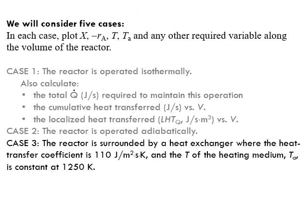Now let's go to Case 3. The reactor is surrounded by a heat exchanger where the heat transfer coefficient U is 110 joule per square meter per second per kelvin, and the temperature of the heating medium Ta is constant at 1250 K. Case 3 is the general case, so we use all the equations derived for the general case and add the equation Ta equals 1250 K.